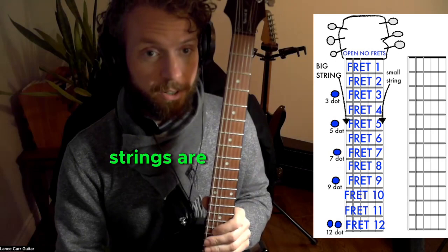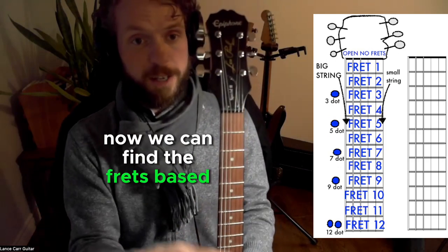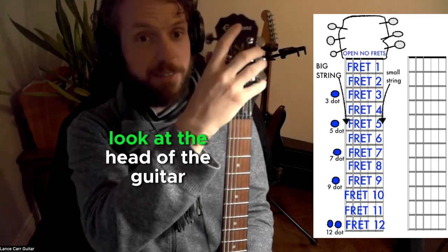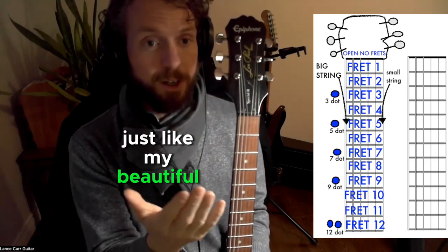So now when you know where your strings are, the next thing to know is where the frets are. Now we can find the frets based on the picture. Look at the head of the guitar with the tuners on the side. Just like my beautiful artwork, thank you very much.